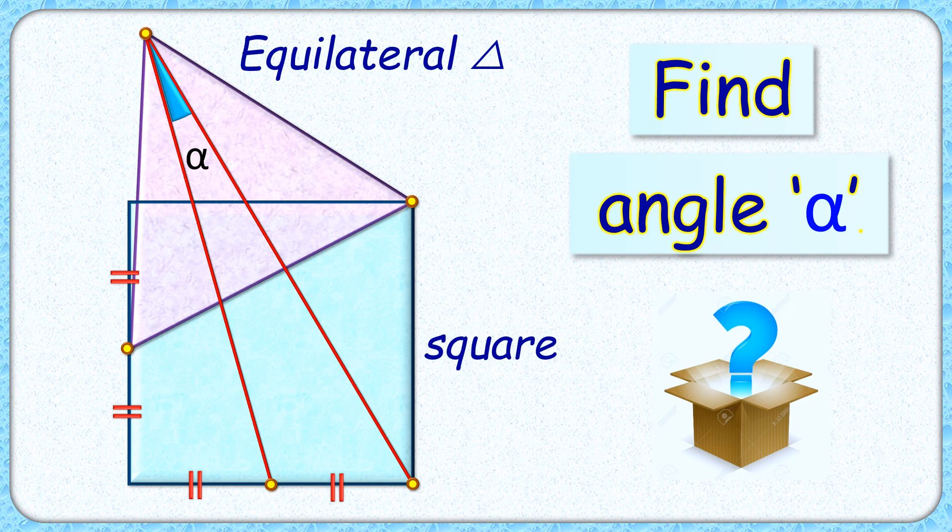Welcome everyone to this interesting question where given to us is an equilateral triangle and a square. These points are the midpoints of the side of the square.